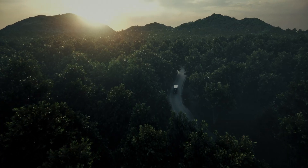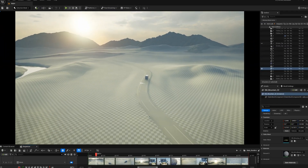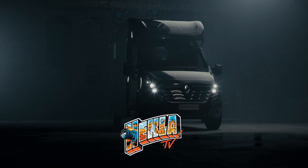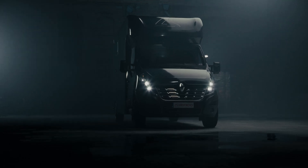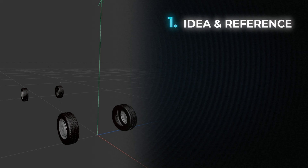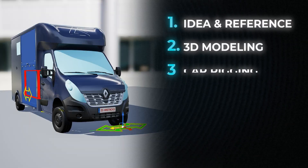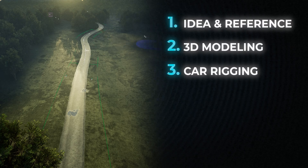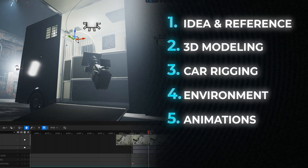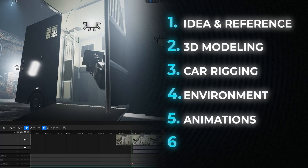Today I'm going to show you how I make cinematic commercials using Unreal Engine 5. Special thanks to HeklaTV for the project — it was a lot of fun to create. We'll break it down in six main steps: the idea and reference, building the 3D model, rigging the car, setting up the environment and lighting, creating animations and camera angles, and finally the edit.